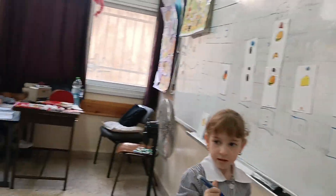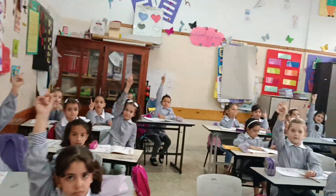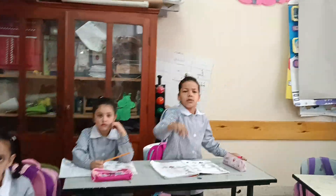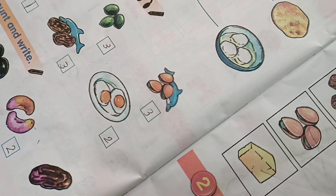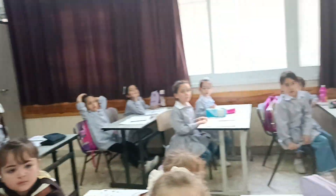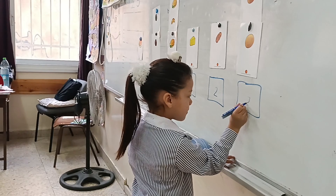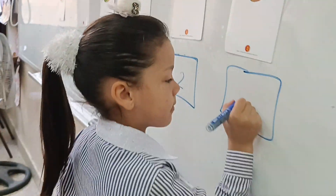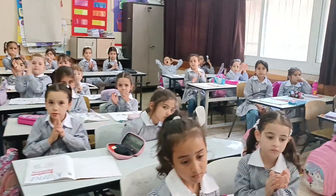Clap for her. Excellent, excellent, very good. The last one — how many eggs? All together, how many eggs? Come and write. Two, not three, two. Clap for her. Very good. Thank you, stand up.